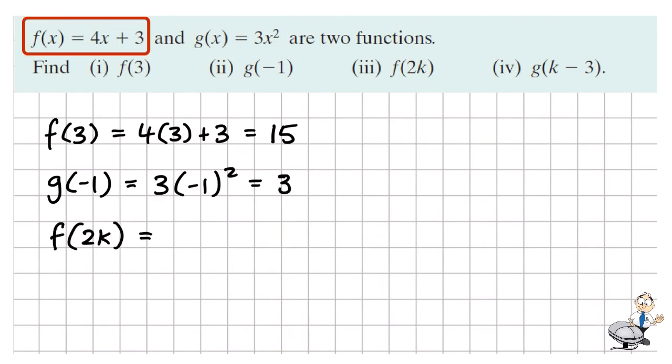f of 2k means we're substituting 2k in for x in the f function. So it's 4 times 2k plus 3. We expand this, it becomes 8k plus 3.